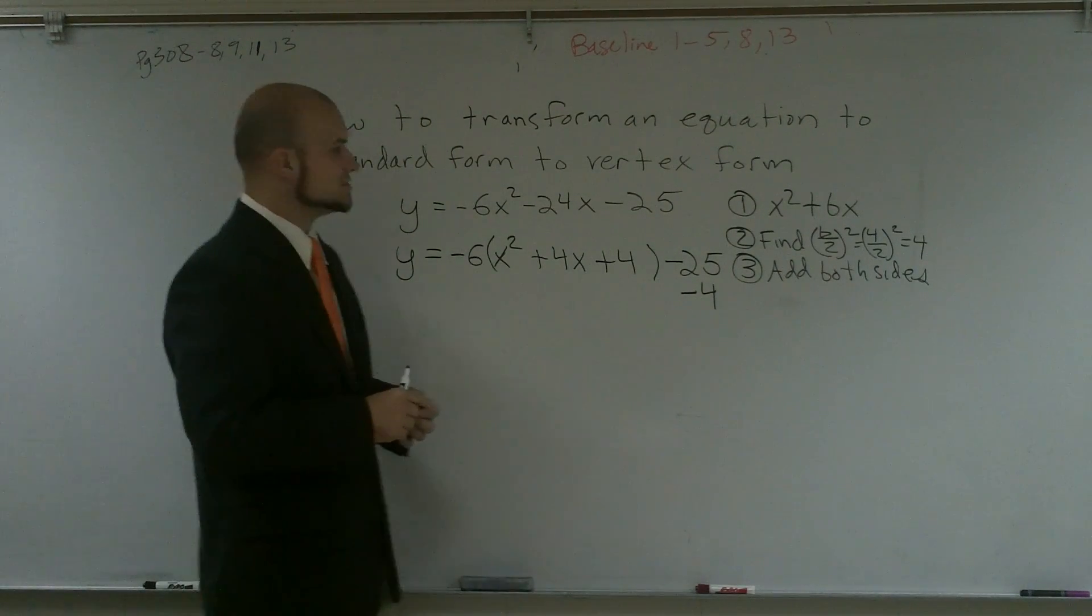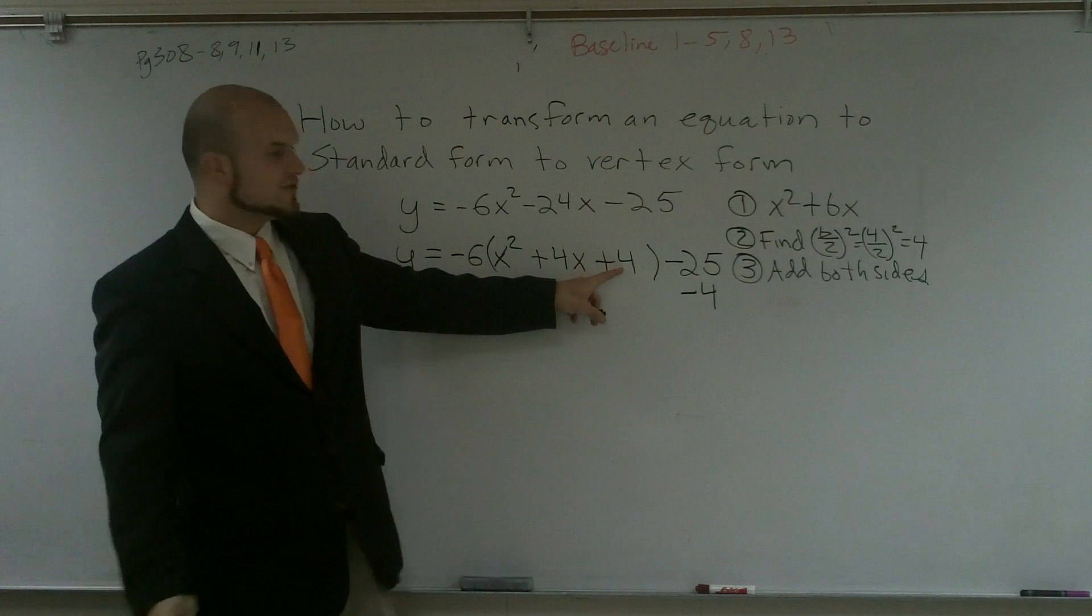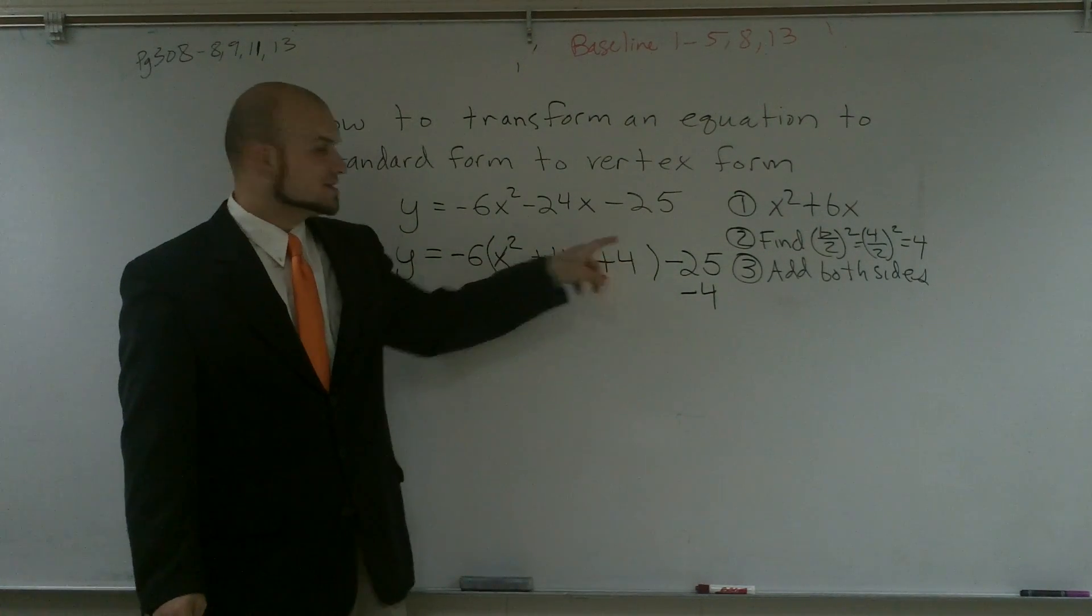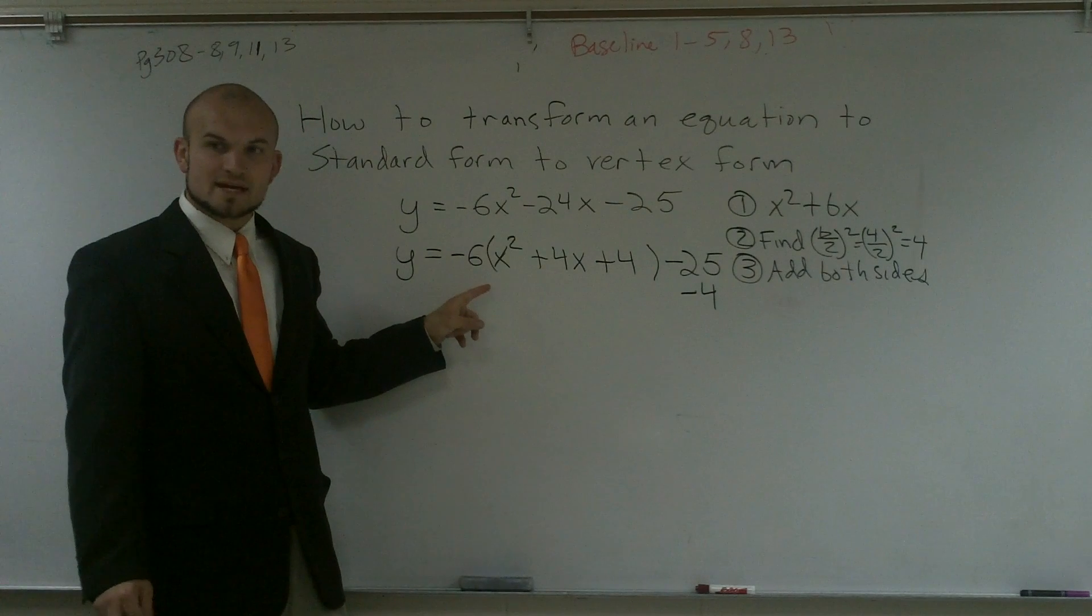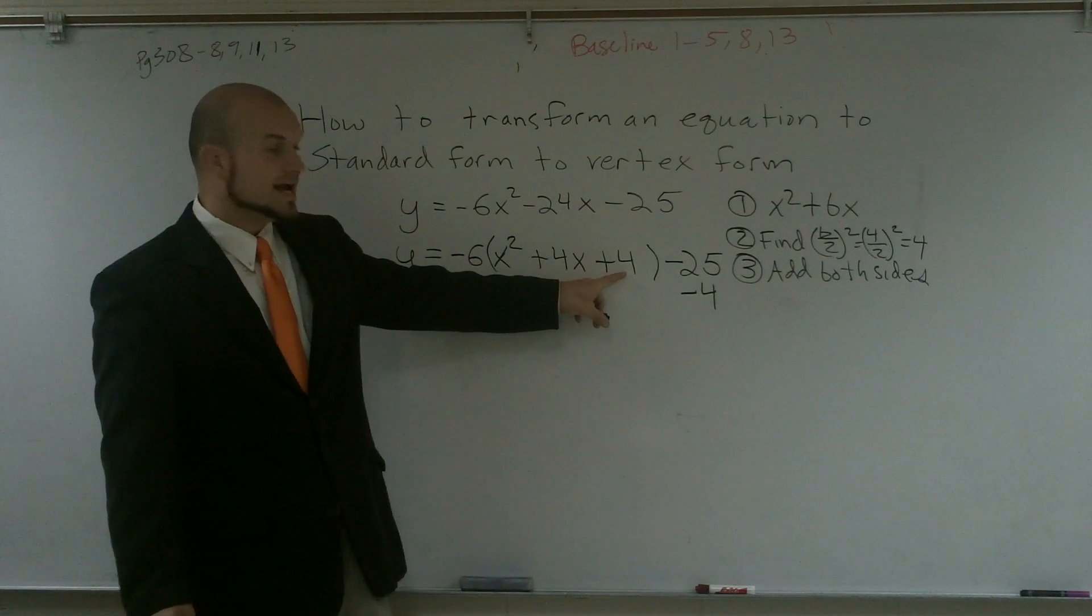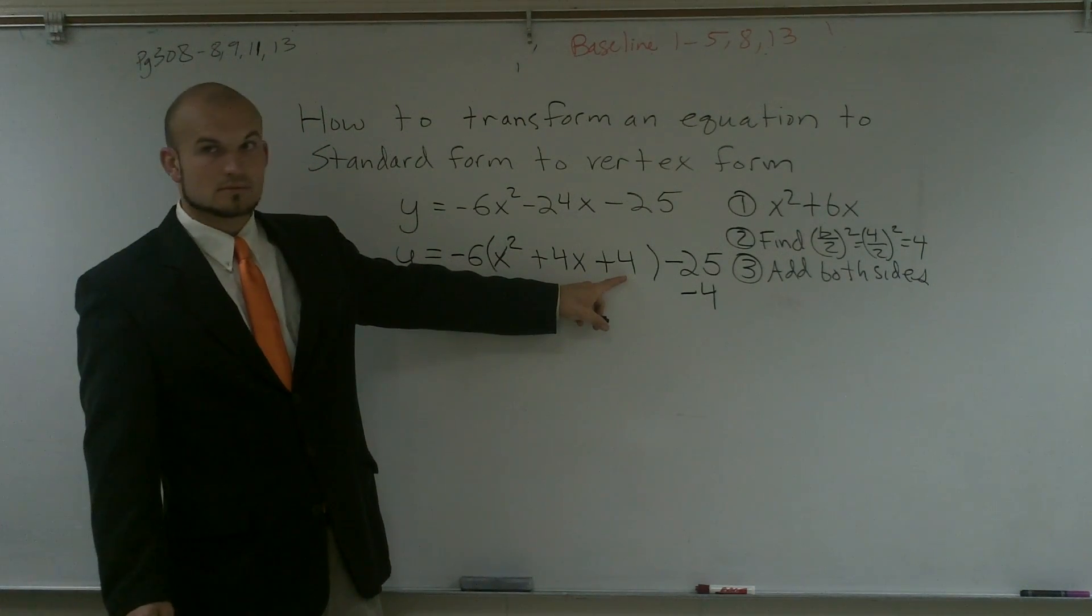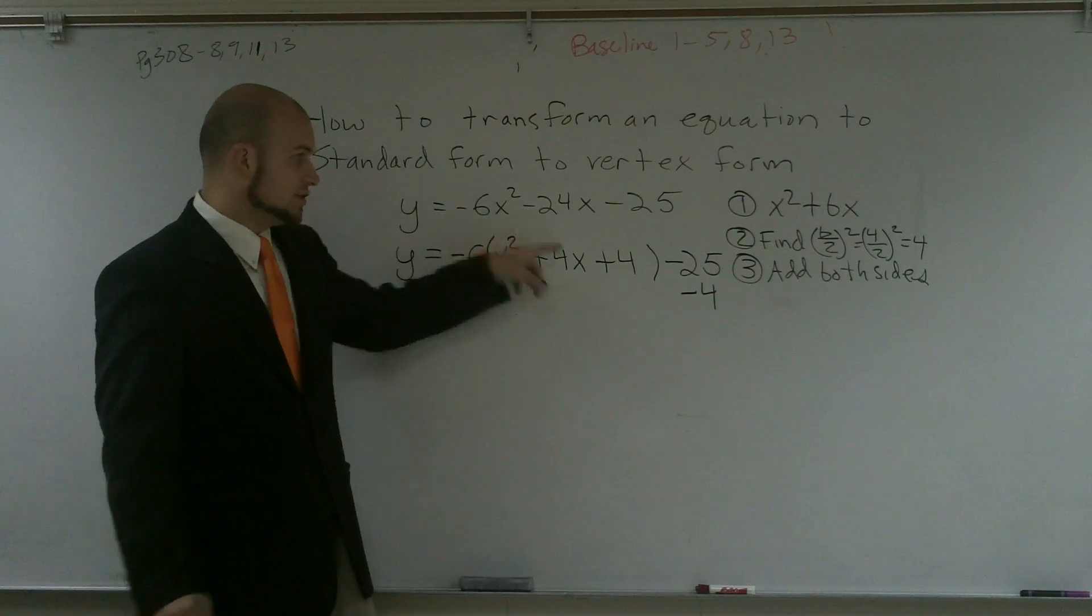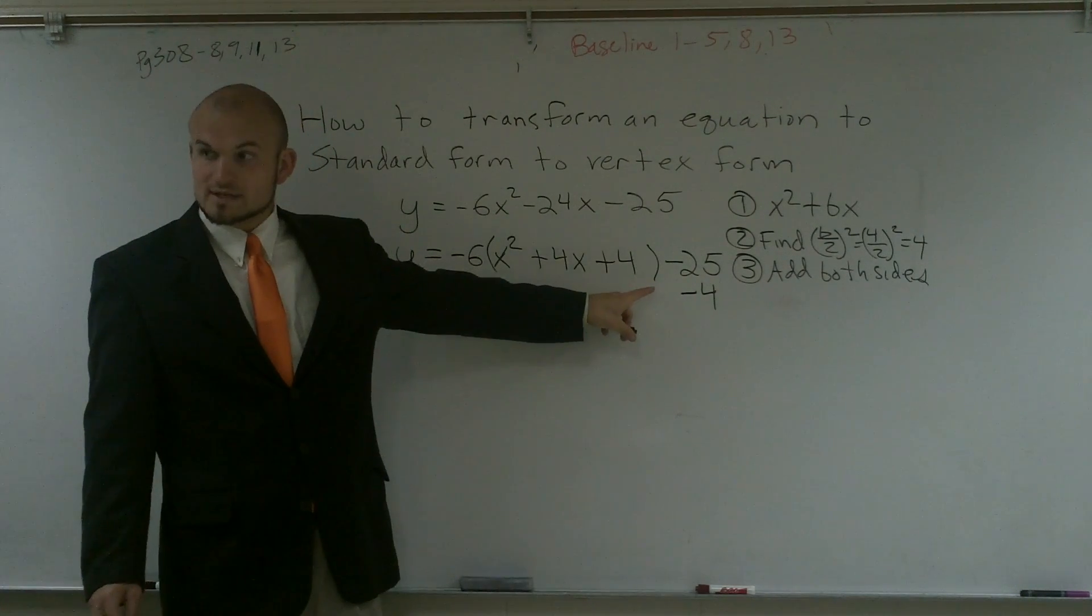However, here's the one mistake that students usually make. I'm adding a 4 in here, correct? But this 4, since that's inside the parentheses, that's actually being multiplied by this negative 6. Does everybody see that? So I'm actually not adding 4. I'm actually adding a negative 24. Because that negative 6, if you distribute this through, negative 6 times 4 is a negative 24.